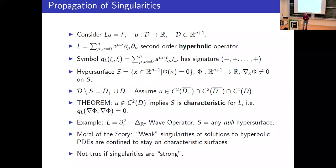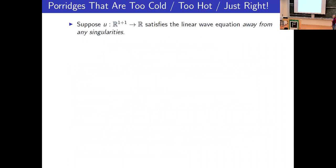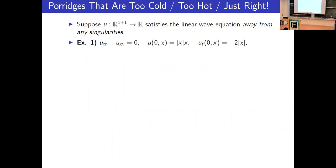This is not true if the singularities are stronger than that. The question is to understand what is the boundary between a singularity doing whatever it wants and being confined to live on a characteristic. The class of singularities at that boundary are the interesting ones. Here's a simple example — they're all about the linear wave equation, with two pieces of initial Cauchy data.